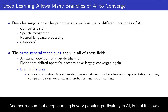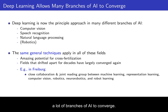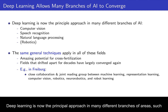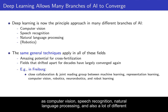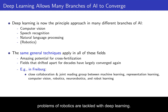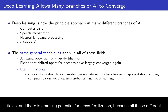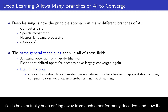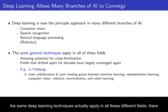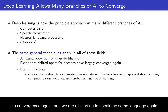Another reason that deep learning is very popular, particularly in AI, is that it allows many branches of AI to converge. Deep learning is now the principal approach in many different areas, such as computer vision, speech recognition, natural language processing, and robotics. Importantly, the same general techniques of deep learning apply in all these different fields. There is amazing potential for cross-fertilization, because all these different fields had been drifting away from each other for many decades, and now that the same deep learning techniques apply across all of them, there is a convergence again and we are all starting to speak the same language.